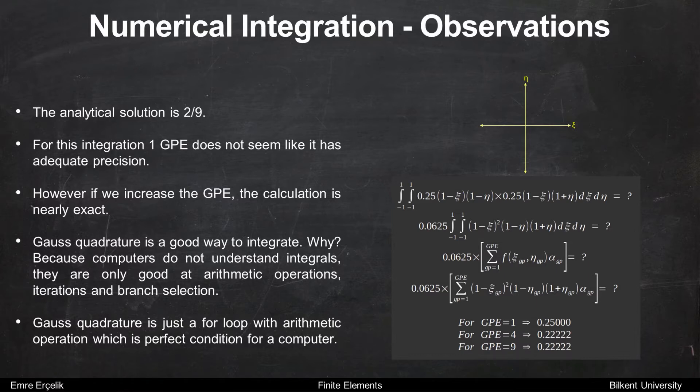For this integration, one Gauss point does not seem to have adequate precision. However, if we increase the Gauss points per element, the calculation becomes nearly exact. Gauss quadrature is a good way to integrate.